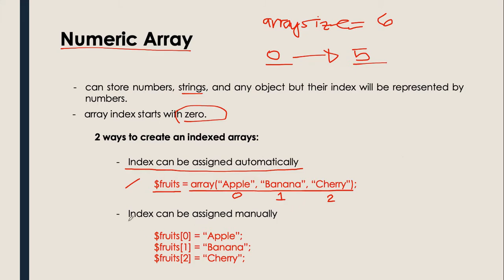How about if we create an index array that can be assigned manually? Without using the array() function, we create fruits[0] = apple, fruits[1] = banana, fruits[2] = cherry. Value and element are the same — don't forget about that. Length and size are also the same.